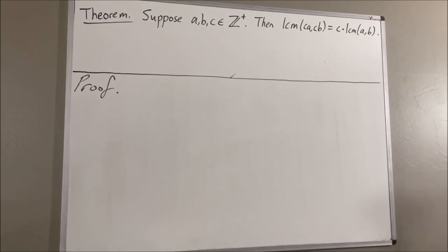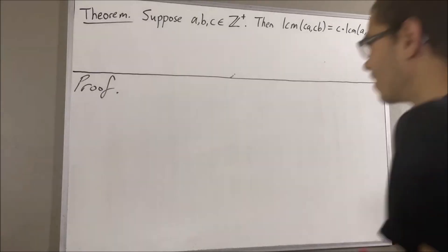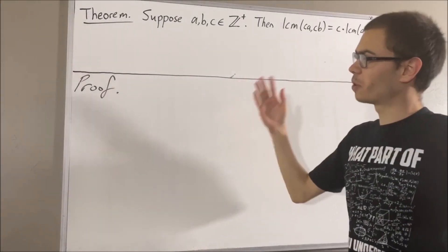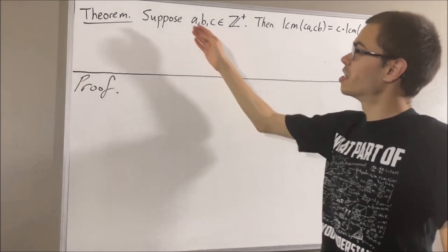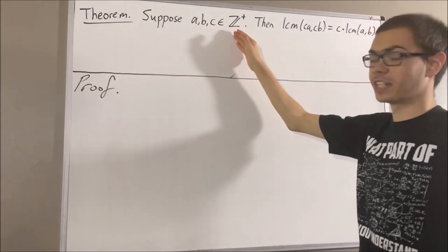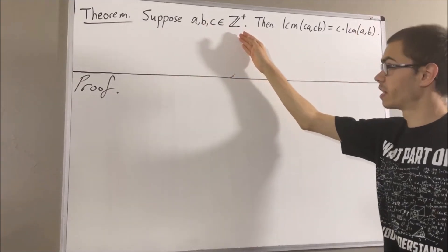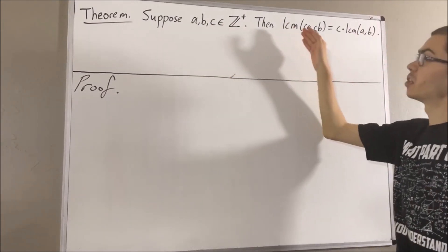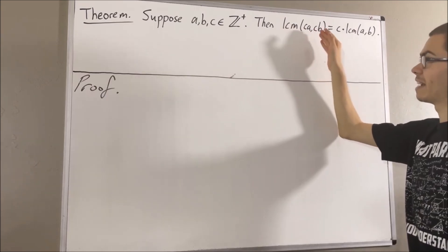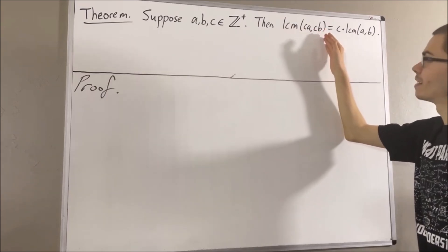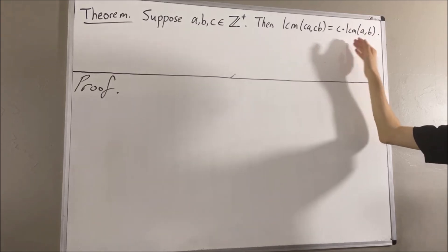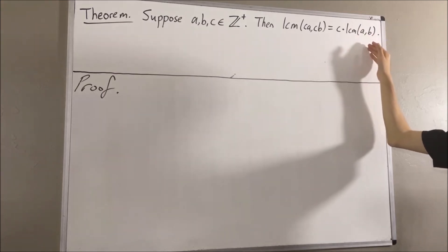Hello! In this video we are going to prove the following theorem. Suppose a, b, and c are positive integers. Then the least common multiple of ca and cb is equal to c times the least common multiple of a and b.